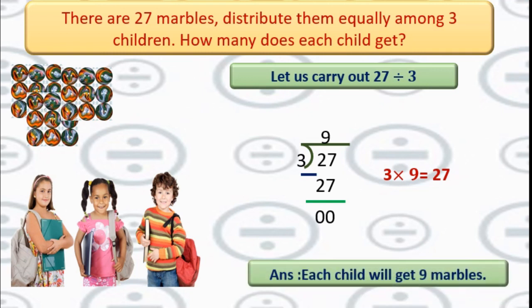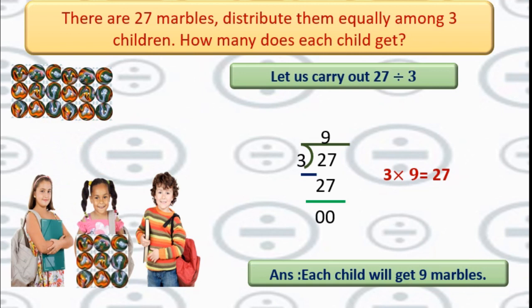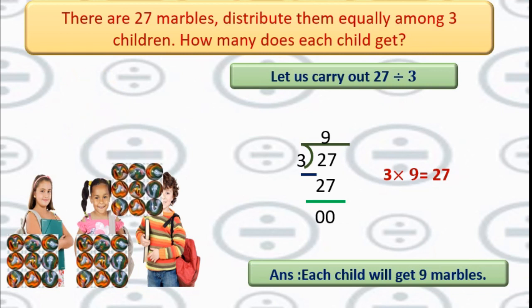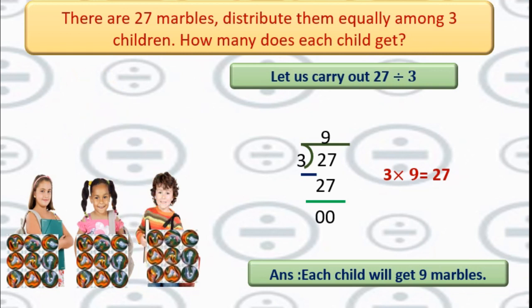Each child will get 9 marbles according to our method. We distribute the 27 marbles among 3 students: these 9 for this girl, these 9 marbles for this girl, and these 9 marbles for this boy. No marbles are left.